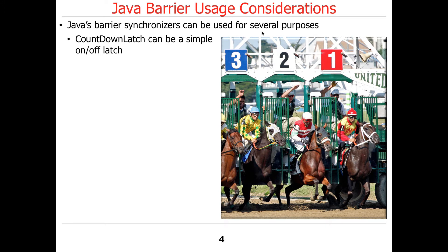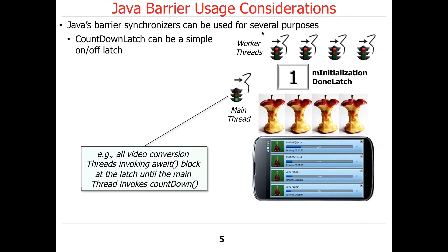You can use a countdown latch as a simple on-off latch to signal things can proceed, either one at a time or multiple things. For example, one use would be to use a latch with a single count where you have the worker threads waiting for the main thread to reach a point where it can let them start to run.